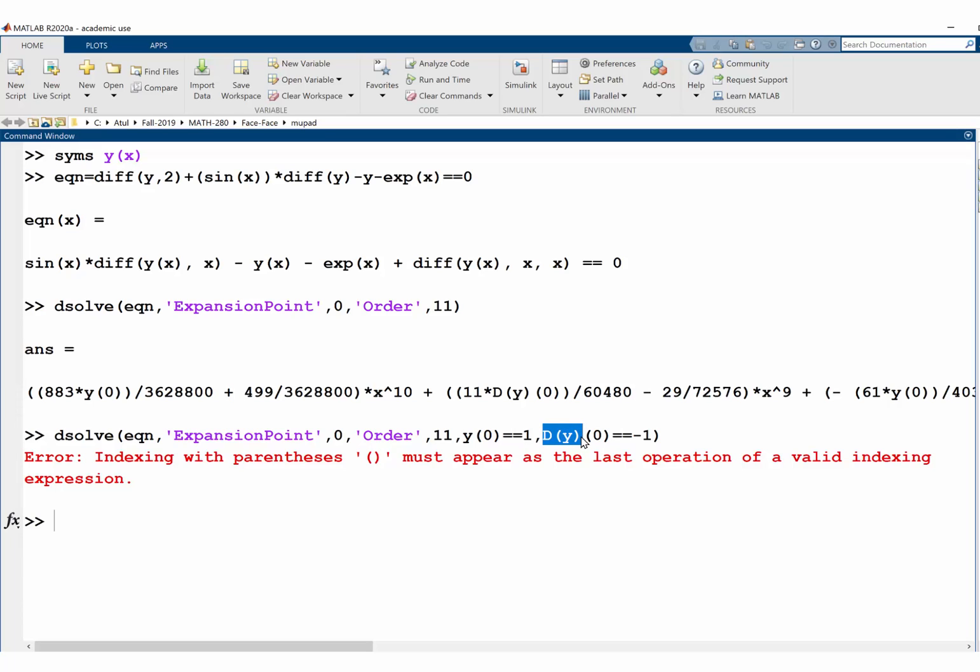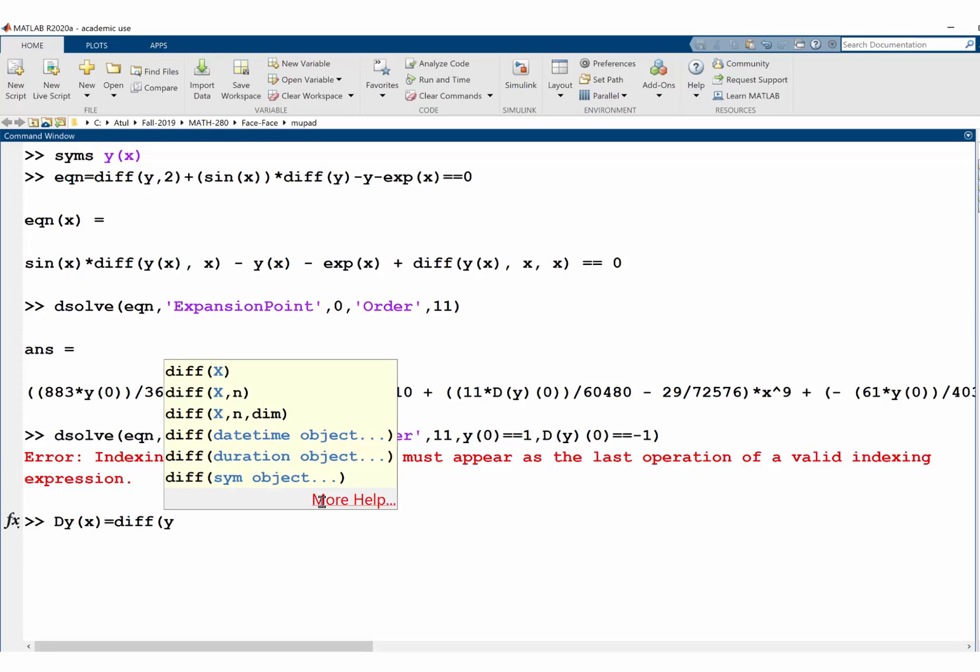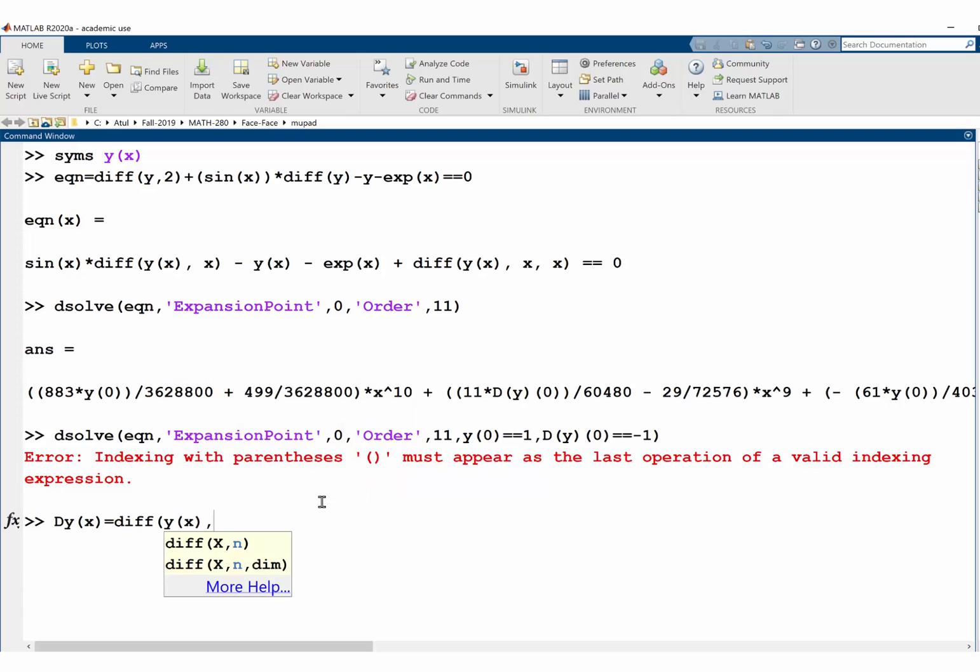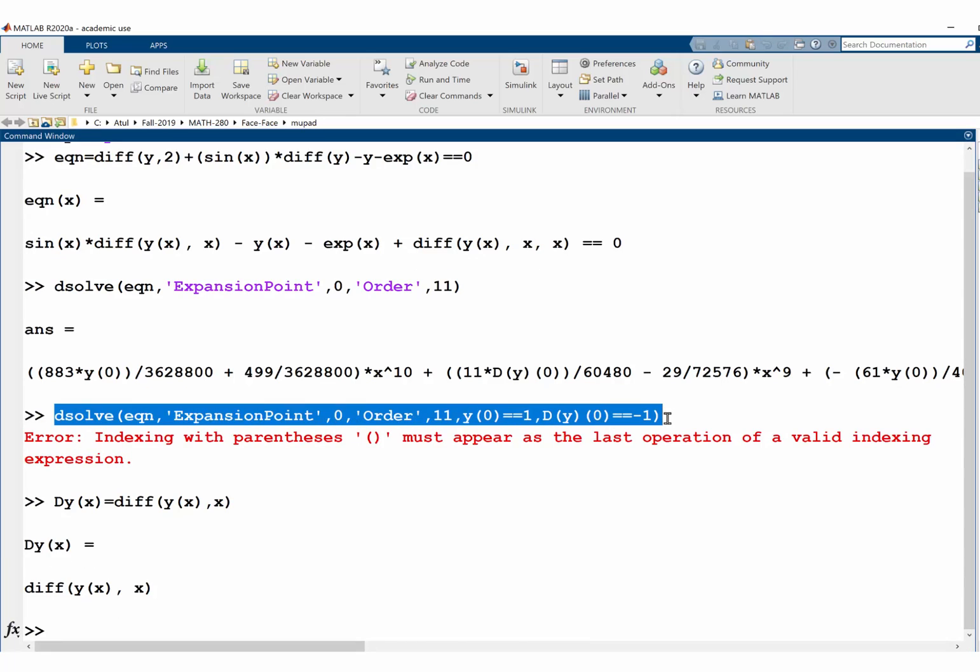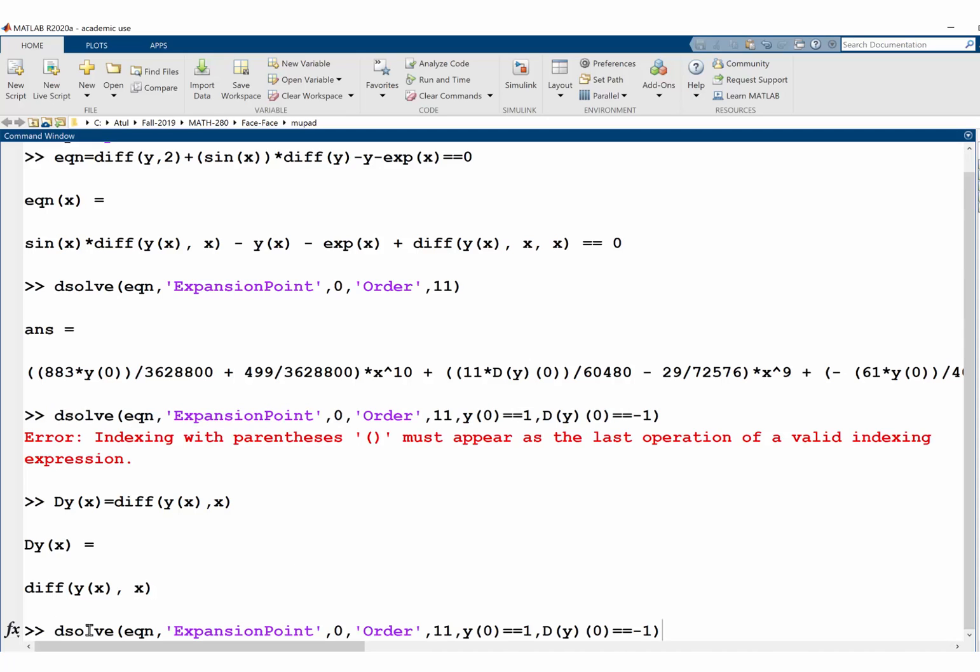So, we will define that. I mean, it writes dy here, so we will assume it knows it, but anyways, let's make that as a guess. So, it's the derivative of y, x, with respect to x, okay, and now let's try it once again, okay, and here we are.